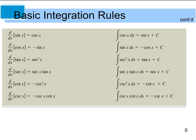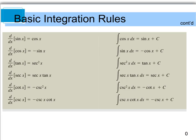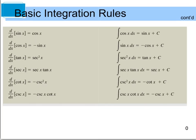Here are trig integration rules. The derivative of sine is cosine, so if I integrate cosine I get sine. The derivative of cosine is negative sine, so if I integrate sine I get negative cosine. You can review the rest of the trig rules on your own. You are expected to know all of these for the AP test — I will not give a cheat sheet on any test or quiz.